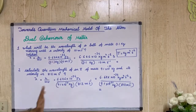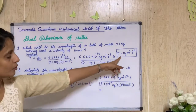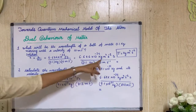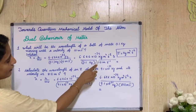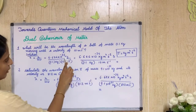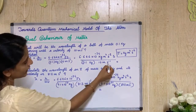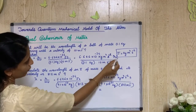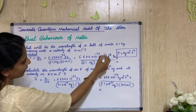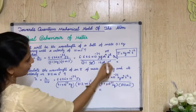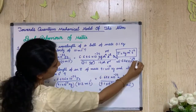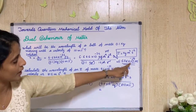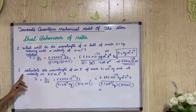We convert joules to kg·m²·s⁻². Joule equals kg·m²·s⁻², so the units simplify. Cancelling kilograms and seconds gives us meters. The final answer for the wavelength of the ball is 6.626 × 10⁻³⁴ meters.